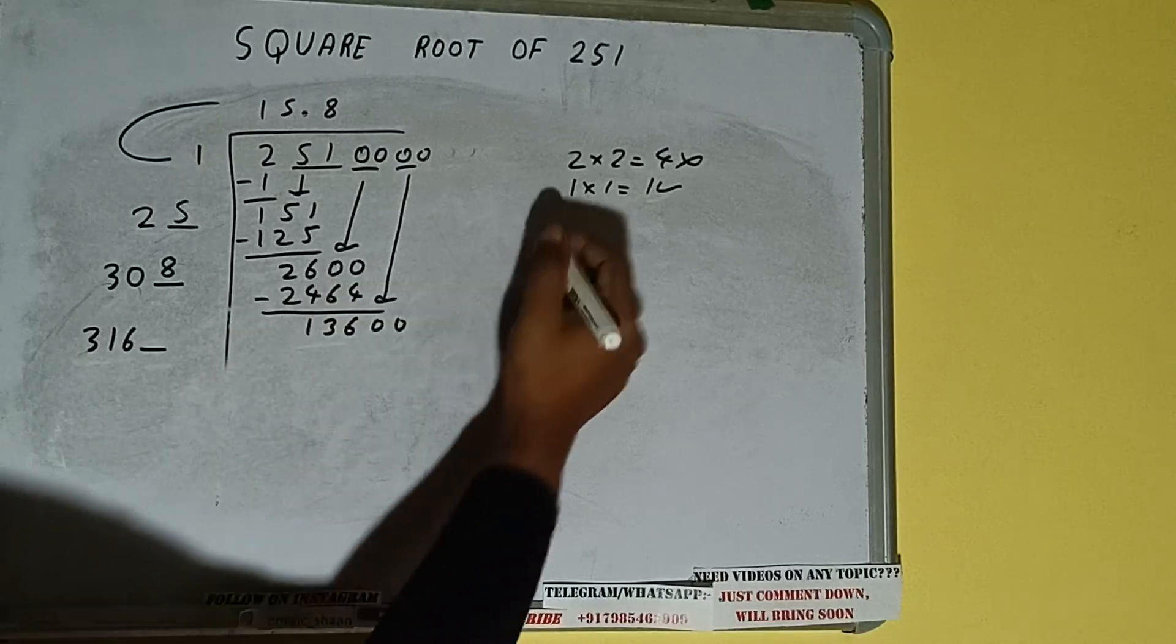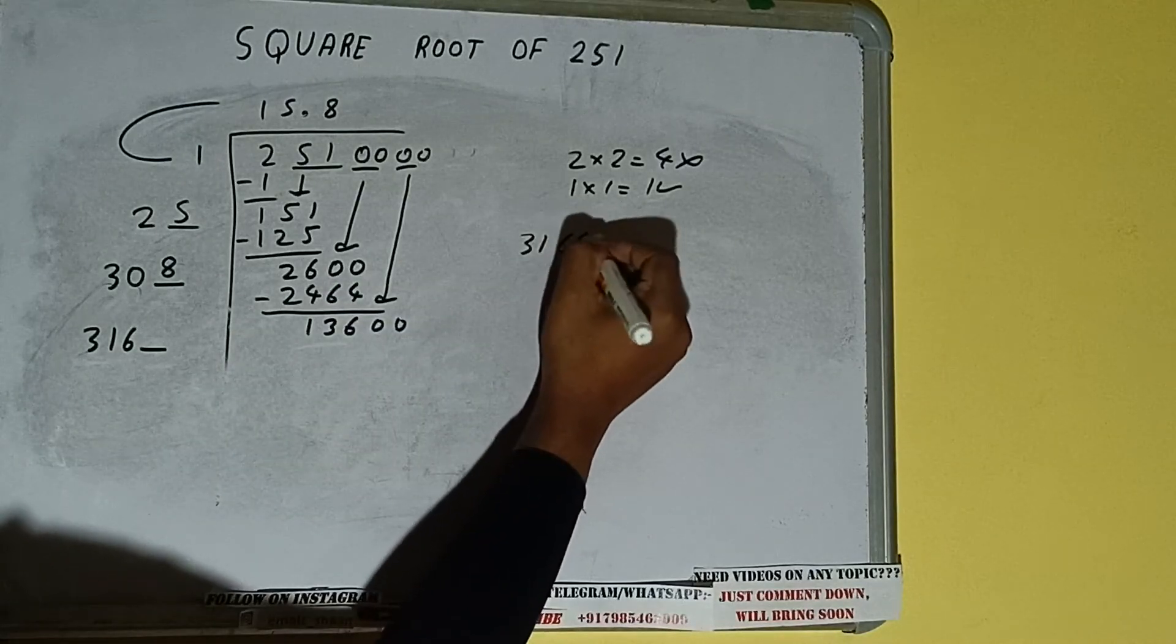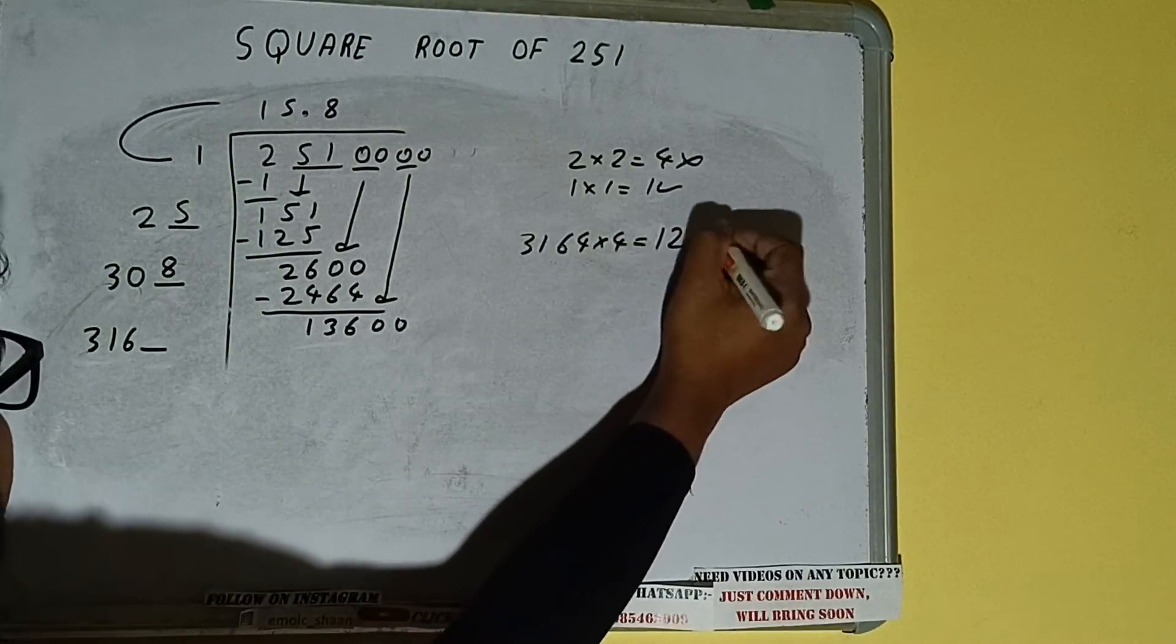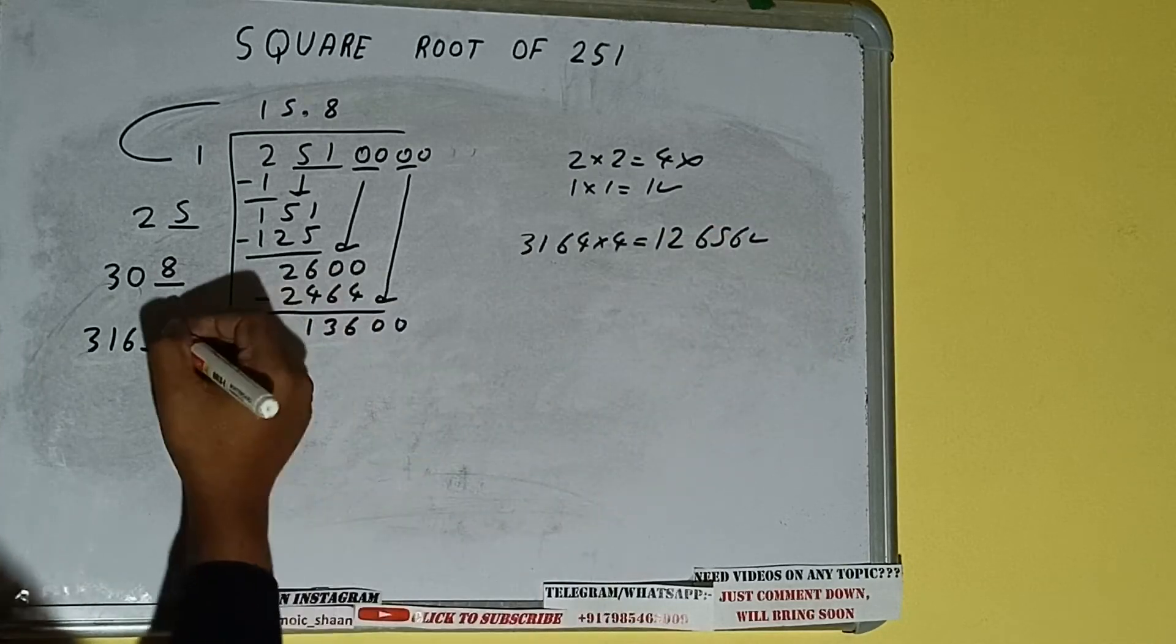So we can try four times. 3164 into four we can try, and we'll be having 12656, which is good to take. So four here and four here.